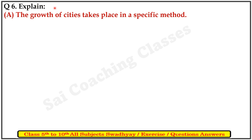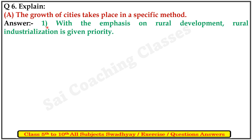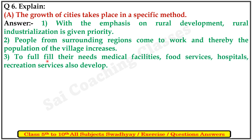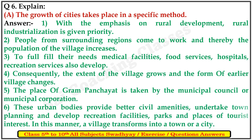Question 6: Explain — the growth of cities takes place in a specific manner. First, with the emphasis on rural development, rural industrialization is given priority. Second, people from surrounding regions come to work and thereby the population of the village increases. Third, to fulfill their needs, medical facilities, food services, hospitals and recreation services also develop.